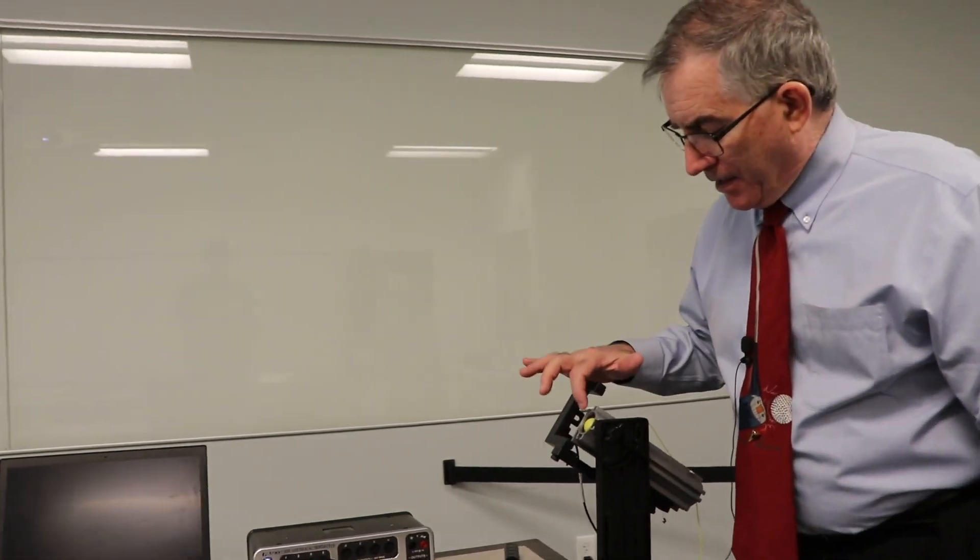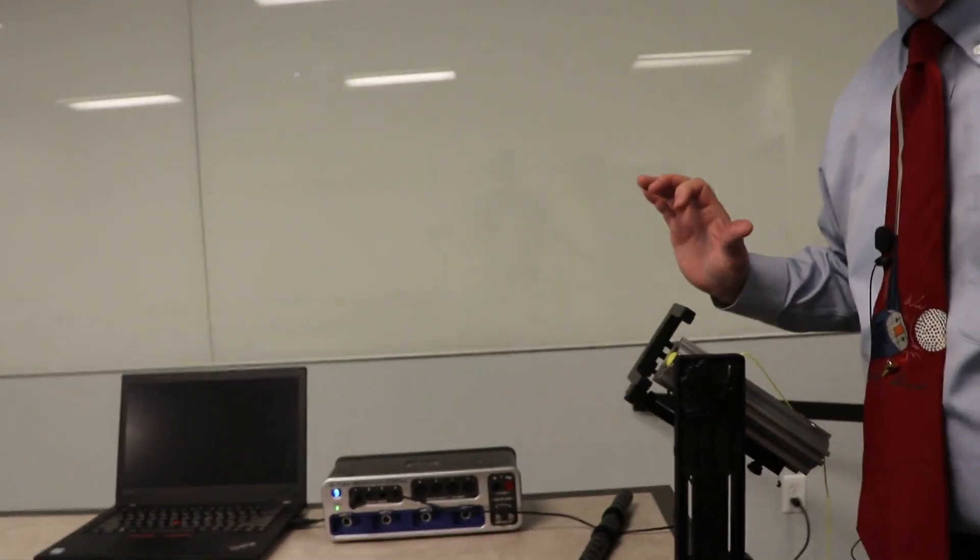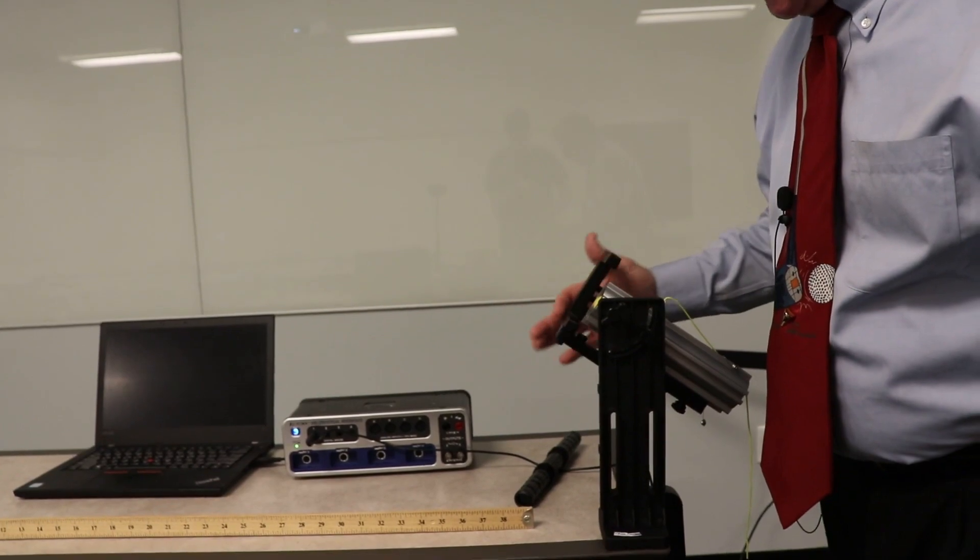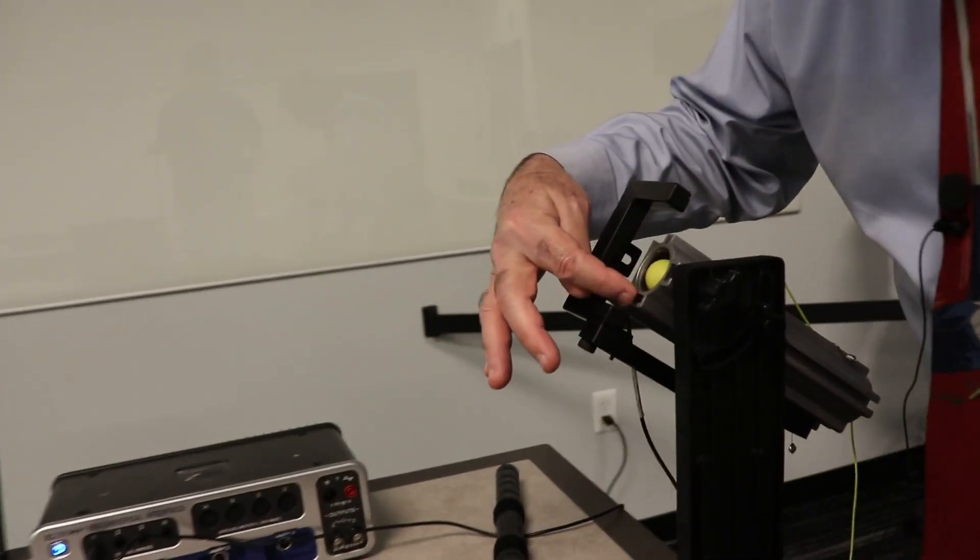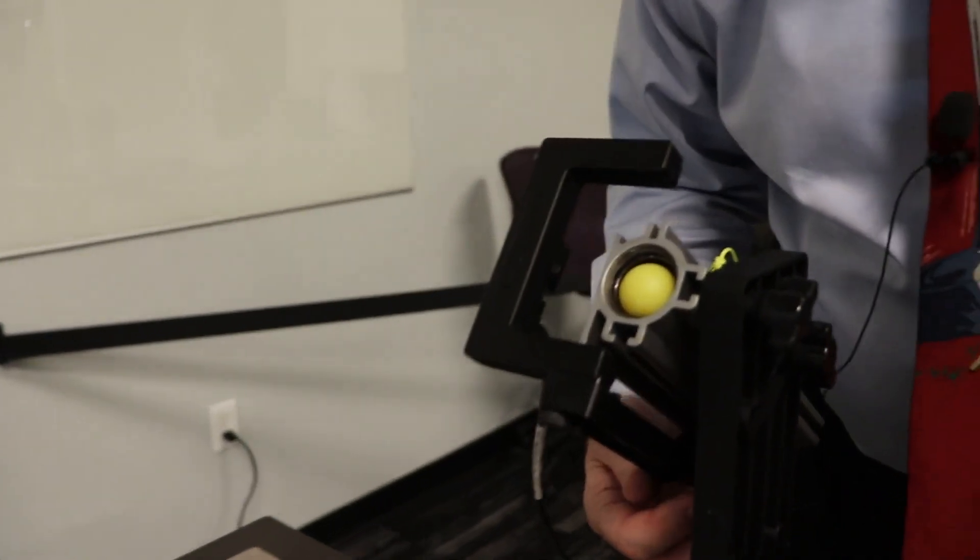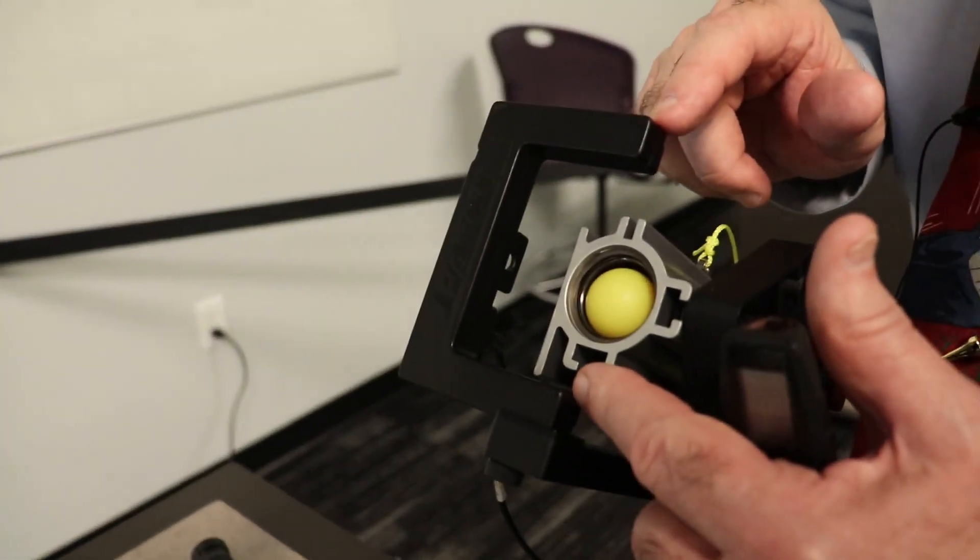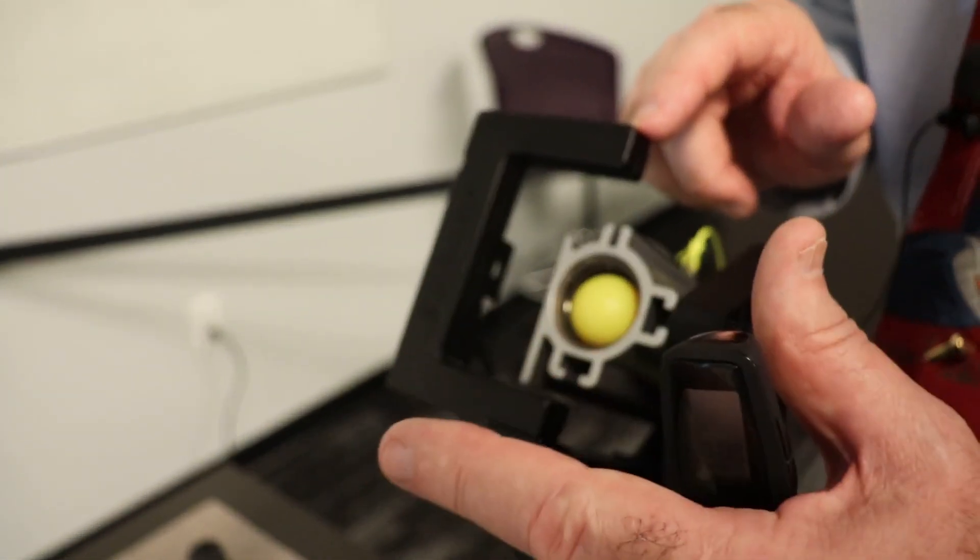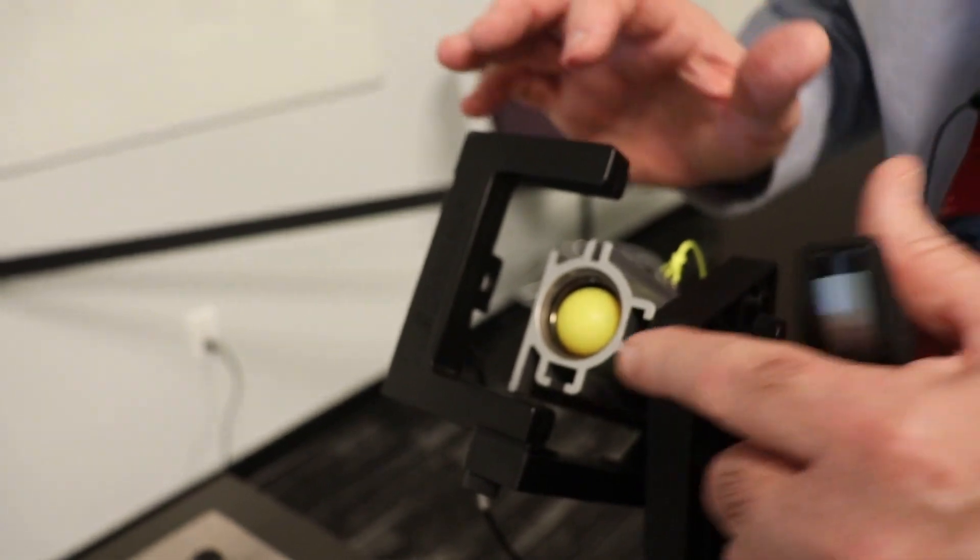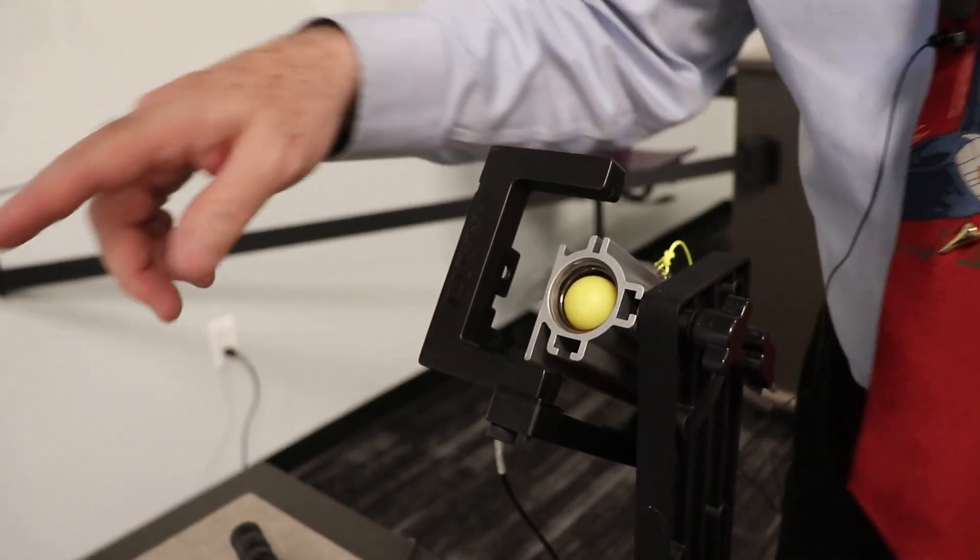Before you actually get started, you need to measure the speed that the ball comes out of the cannon. We have a photogate set up right here, and it slides right into a channel down here, and you tighten it.